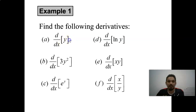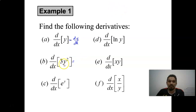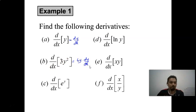Differentiating y with respect to x gives us dy/dx. For 3y², just like deriving 3x² gives 6x, deriving 3y² gives 6y, but because we differentiate with respect to x, we multiply by dy/dx.